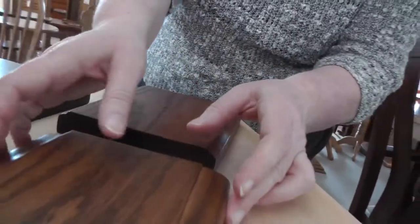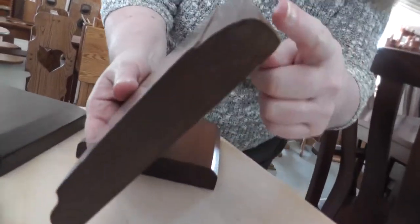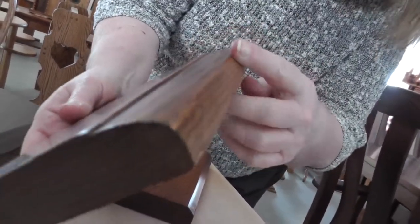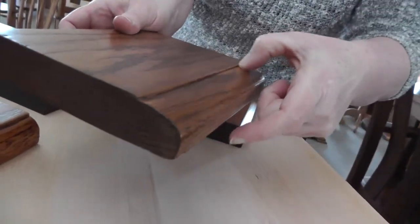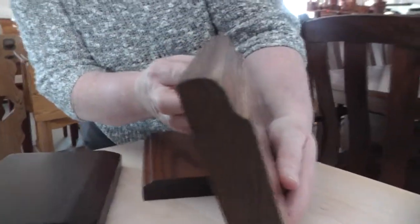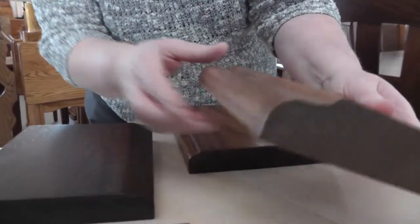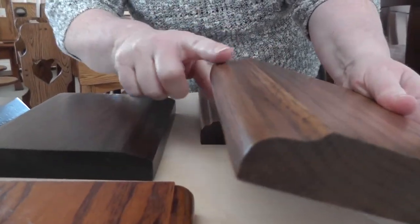A couple more styles we have these are kind of similar. This side is called the full thumbnail. There's an edge there and then a round over. And this is the traditional edge. It has a softer lip here and a round over.